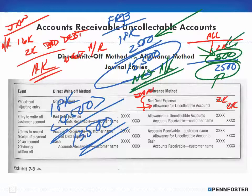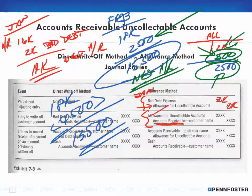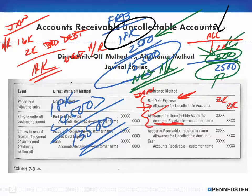When we actually decide to write off a specific customer's account, this is the entry we make to get rid of the accounts receivable: debit allowance for uncollectable accounts and credit accounts receivable. It does not go to bad debt expense — we already wrote off to bad debt in the adjusting entry. We're backing off against the allowance account in order to keep that allowance account more accurate.